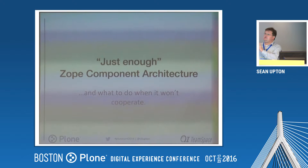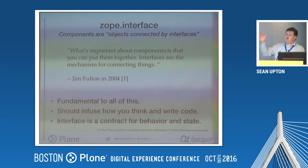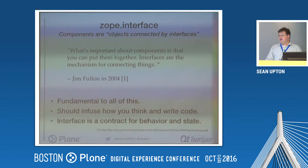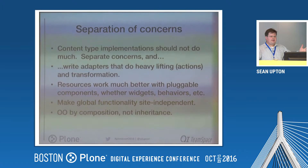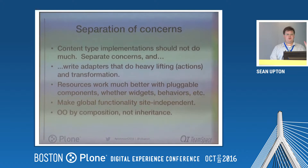So just enough — what do we do with the component architecture? My basic principle is that objects have interfaces; that's what a component is. But they're also connected by interfaces — that's Jim Fulton's language from a presentation he gave in 2004. The interface is basically the contract; it's fundamental to everything we're doing in Plone and should infuse how you think and write code. It's a contract for both behavior and state. It provides for separation of concern: we can have content types where we write fields representing what we want to store, and then separate that concern into something like an adapter that does heavy lifting.